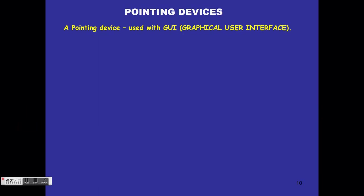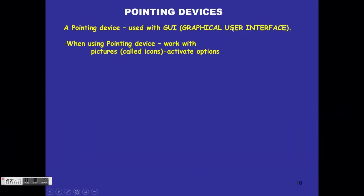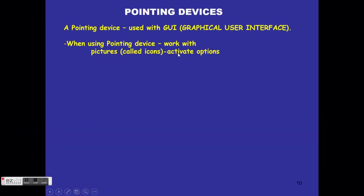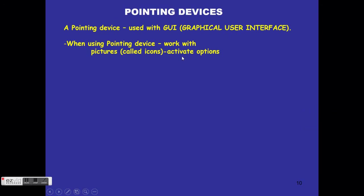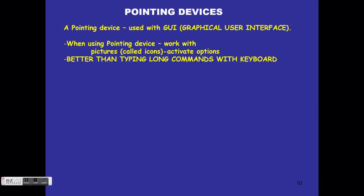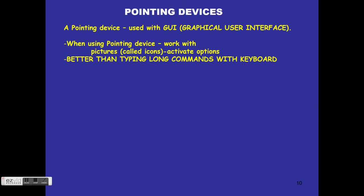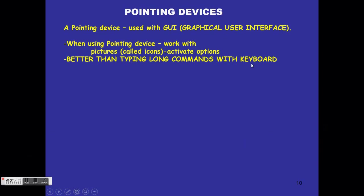Still on input, but a category below: pointing devices. These are used in a graphical user interface (GUI), meaning the computer uses graphics for the user to interact with. When using a pointing device we work with pictures called icons, which we activate. Icons are options on the computer that you can choose. Using GUI is much better than typing long commands in a command line interface.